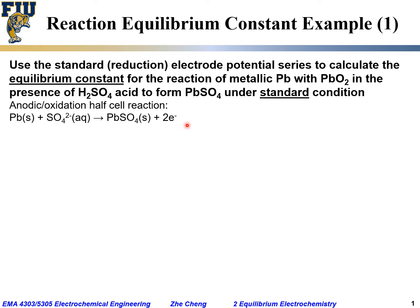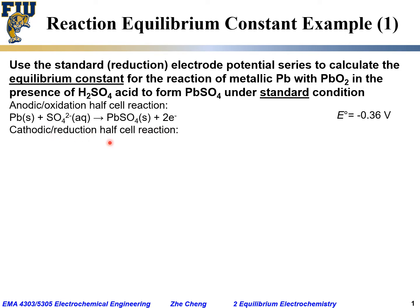For this anodic half-cell reaction, the standard electrode potential — if you look at the table — is minus 0.36 volts. On the other hand, for the cathodic or reduction half-cell reaction: